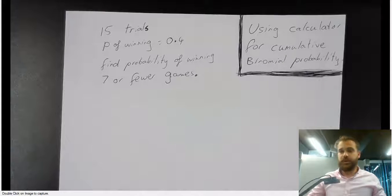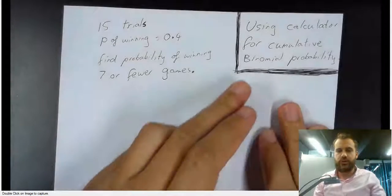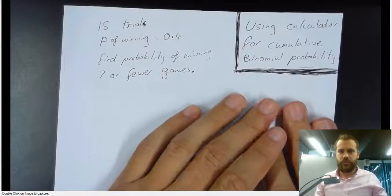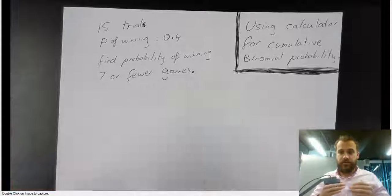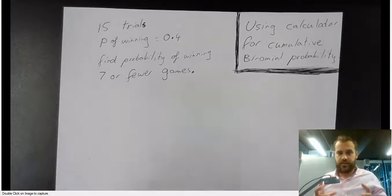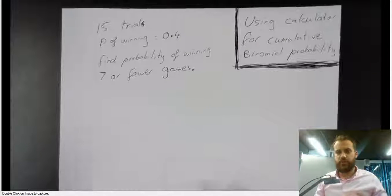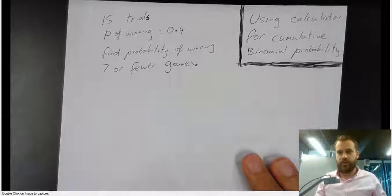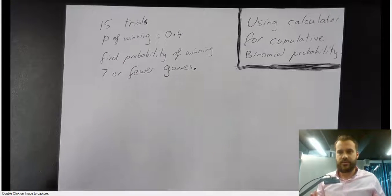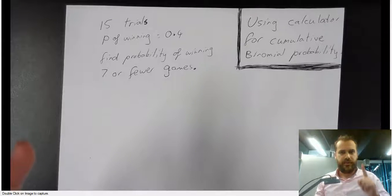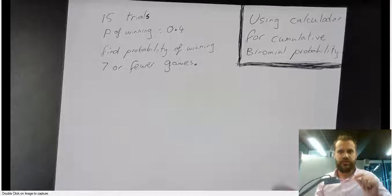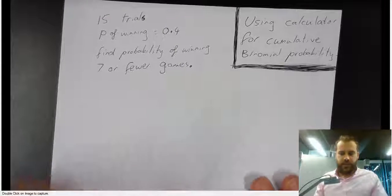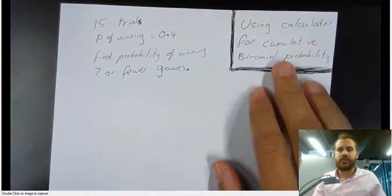This question gets a little bit complicated, but I think we can handle it. It's using your calculator for cumulative binomial probability. So what does cumulative mean? It means adding things. In past questions, our binomial probability has been very simple — we said something like 15 trials and we want to know the probability of 7 successes, or 8 successes, or 2 successes. We wanted to know the probability of something exact. Here we want to know the probability of a cumulative event.